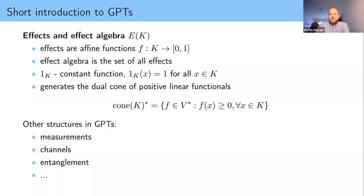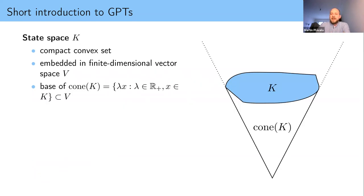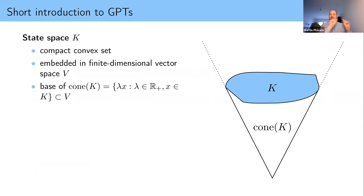[Answer] Yes, one can formalize this in a more axiomatic fashion, and it's easier to do for the state space. You assume you have a set of preparations — everything you can do in the lab. You assume the set is closed in some topology, because if you can approximate a state arbitrarily well then you can prepare it exactly, or close enough. The third assumption is convexity: you can do randomized preparations. There's one more assumption that this lives in a finite-dimensional vector space, just for convenience — without it you get very abstract convex sets which are hard to work with.